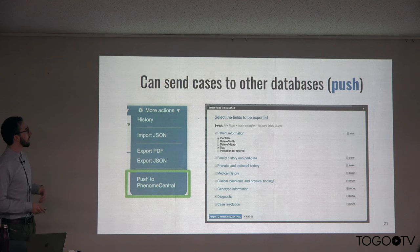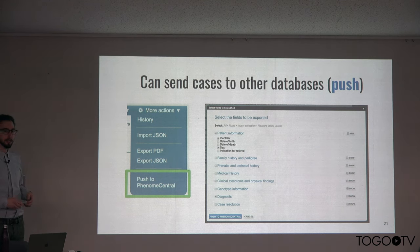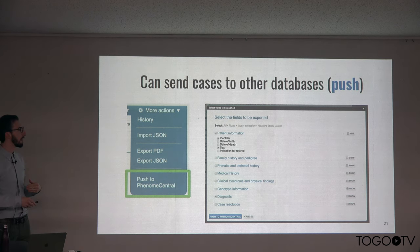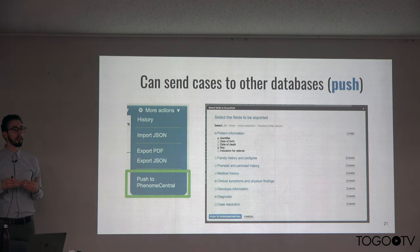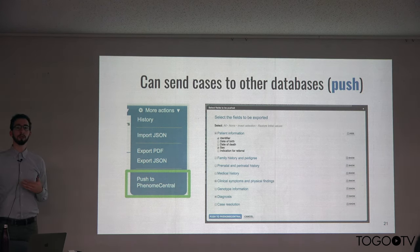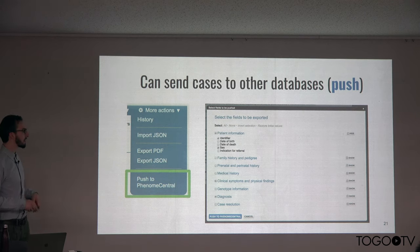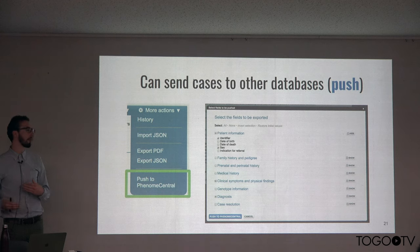Phenotips has the functionality to send cases to other databases — the ability to push cases from one database to another. They still exist on the original database, but a copy is sent to the other that can be overwritten if the source changes, and you get full control over which information to send. This allows setting up research databases that will not store identifiable information like the patient's name, while still giving the original user control over other information they'd like to send, such as medical history or genetics.